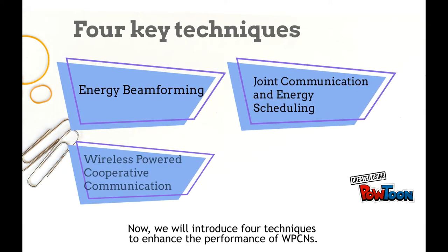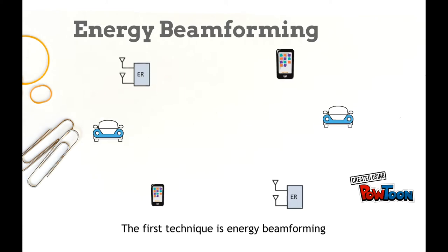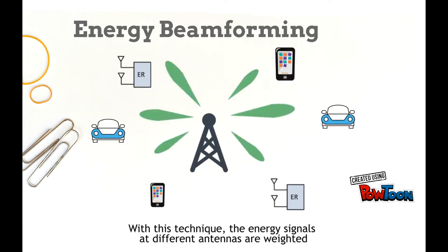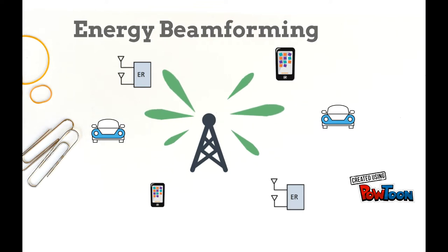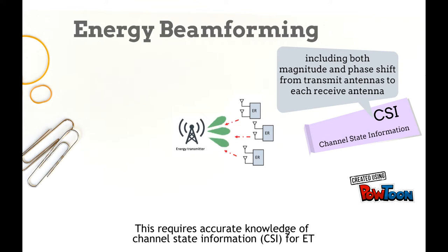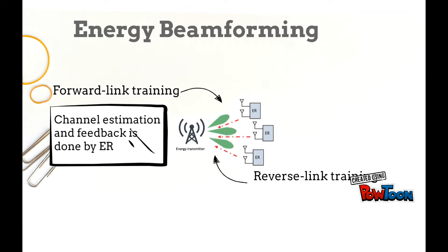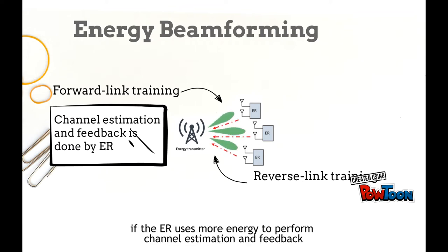We will introduce four techniques to enhance the performance of WPCN. The first technique is energy beamforming. With this technique, the energy signal at different antennas are correlated to achieve constructive superposition at the intended energy receiver (ER). This requires accurate knowledge of channel state information (CSI) for the energy transmitter (ET). For forward link training, channel estimation and feedback is done by the ER. More accurate CSI knowledge can be obtained by the ET if the ER uses more energy to perform channel estimation and feedback.